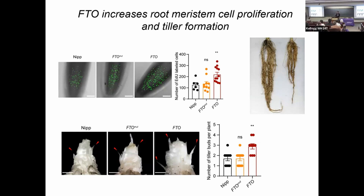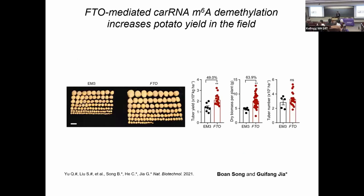We also have potato results — in 5–6 of 8–9 plants we see a dramatic effect. Importantly, we are not adding something foreign; we are adding a demethylase to remove an endogenously existing methylation, so this regulation is intrinsic to the plant. This type of chromatin regulation produces phenotypes not previously seen with other approaches in plants.